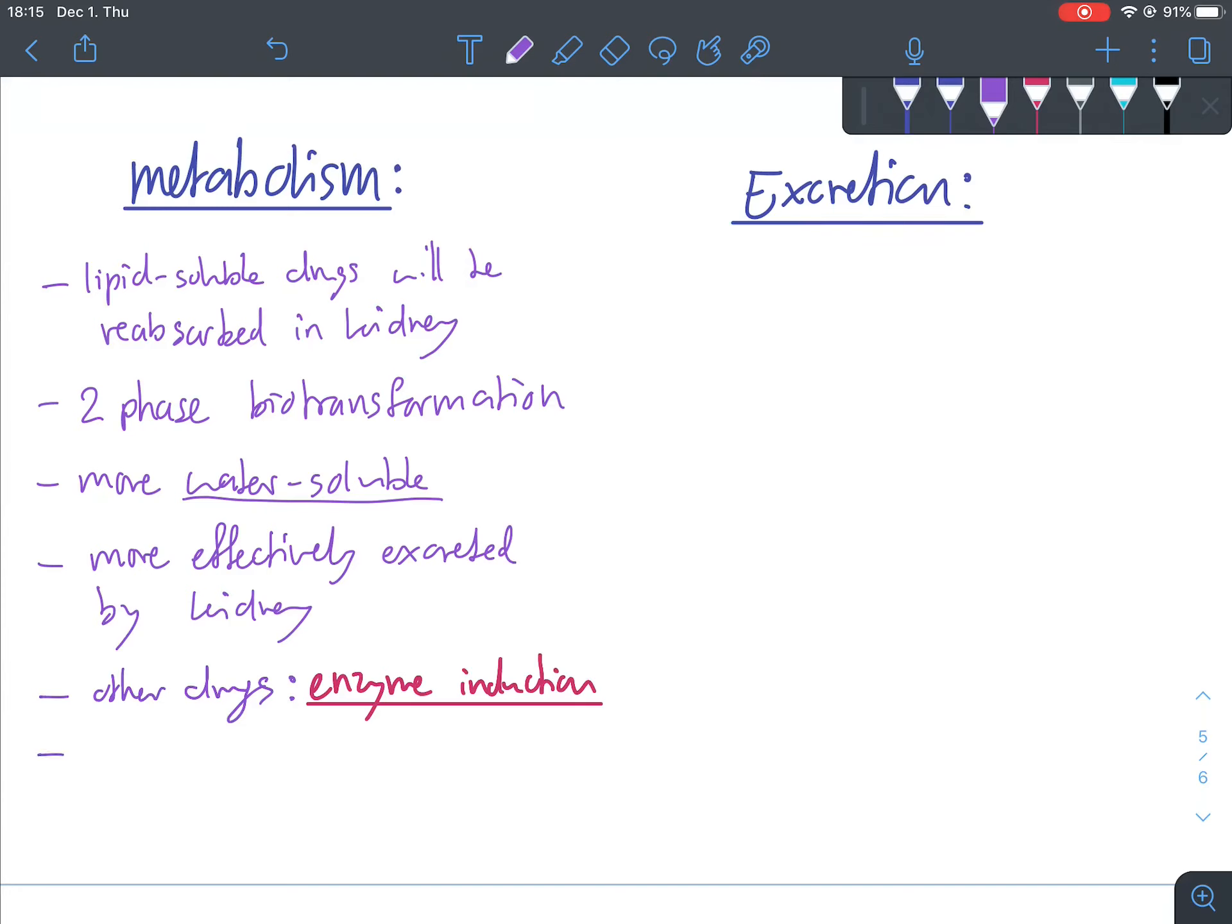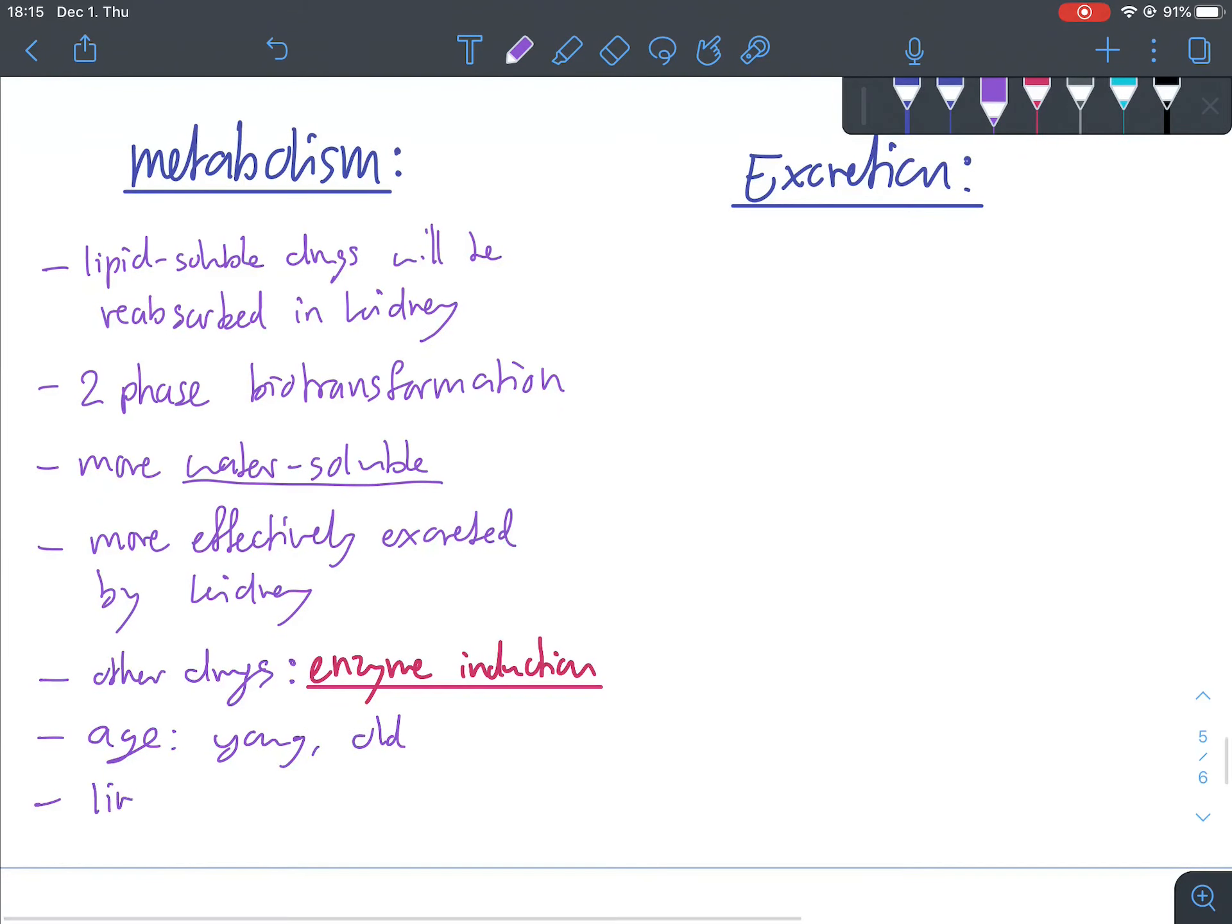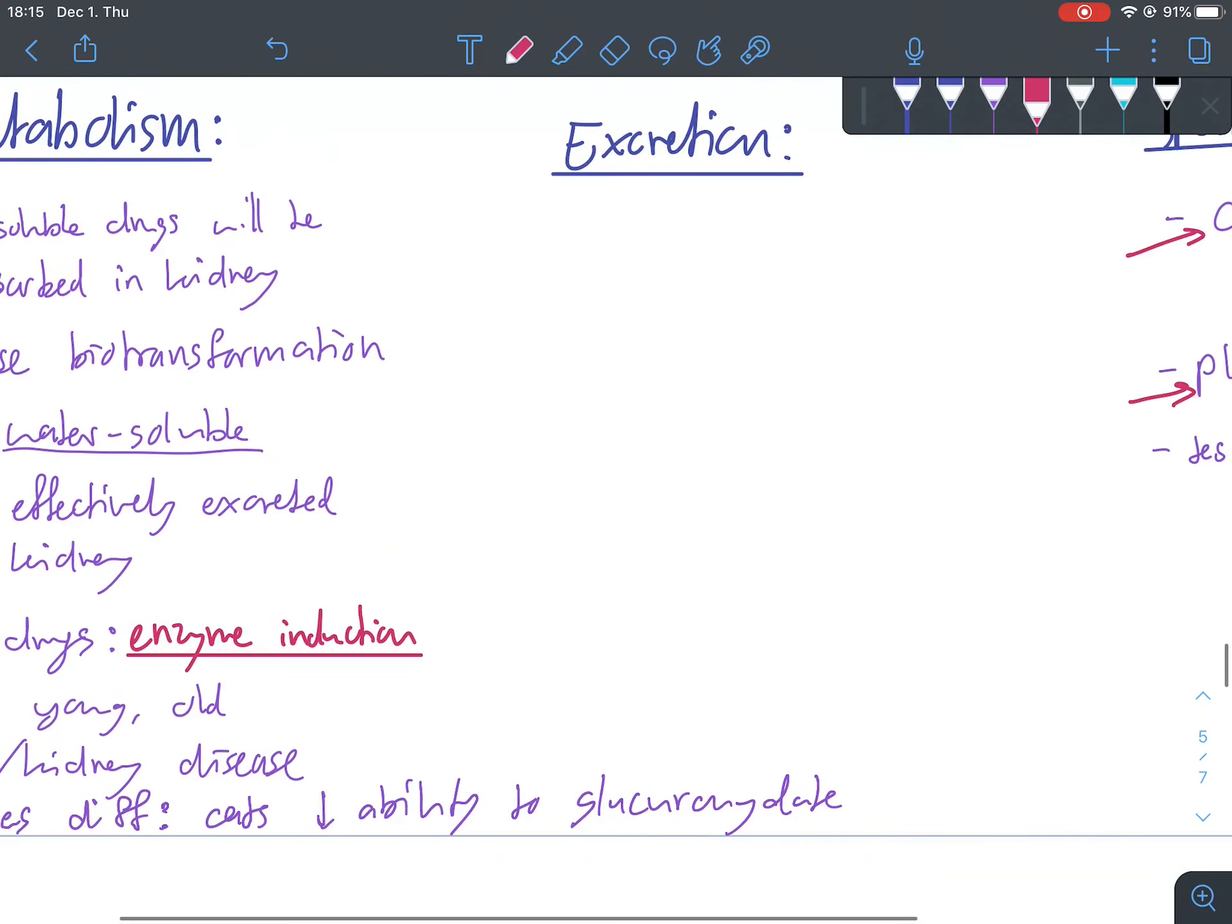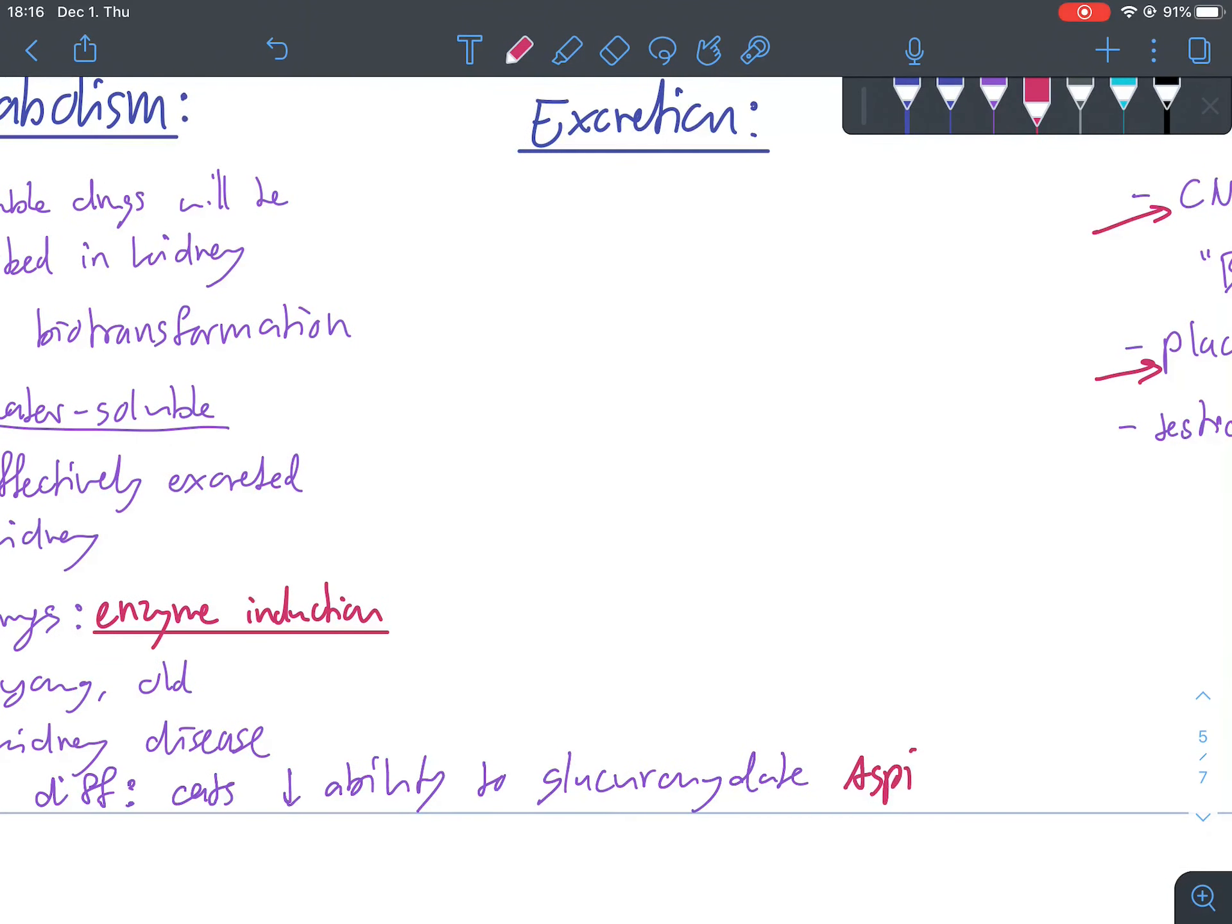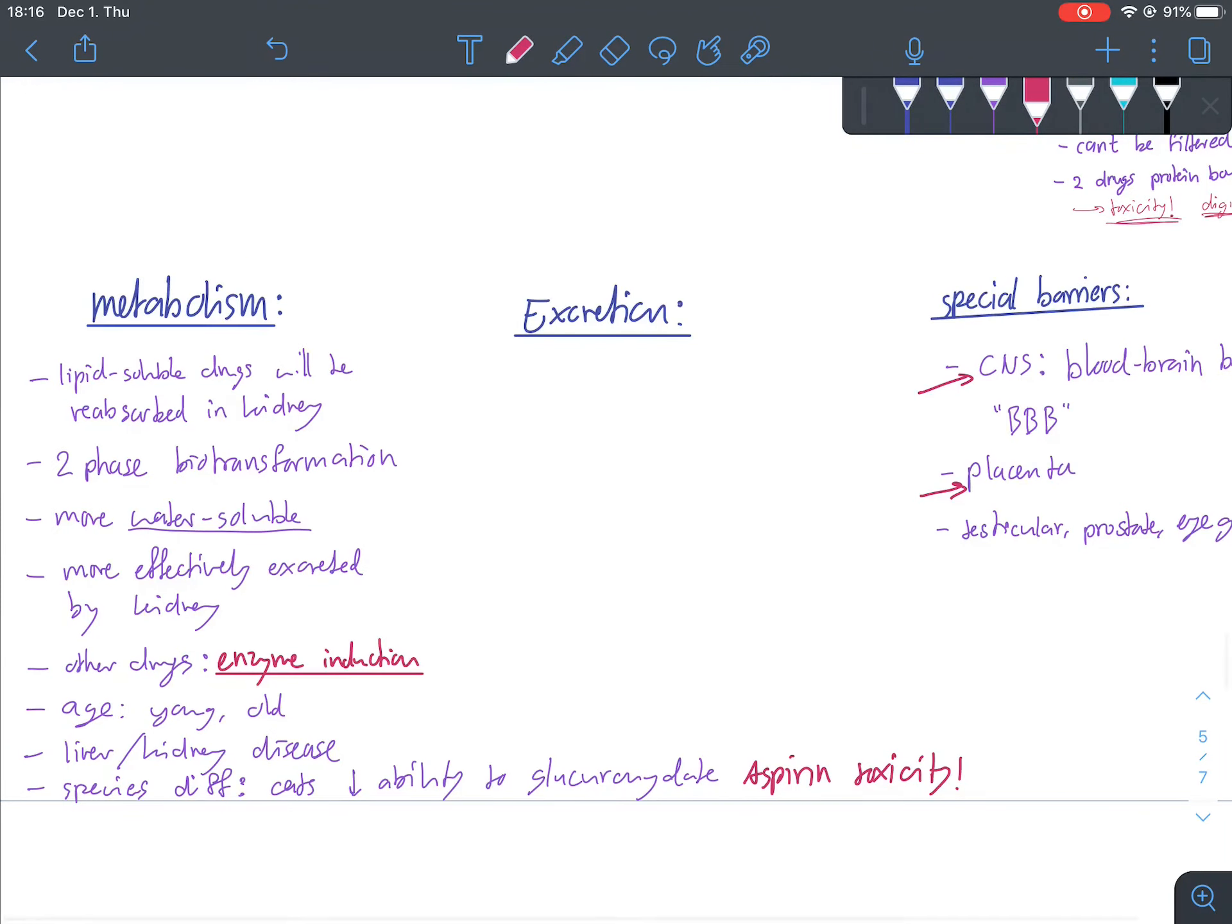And obviously the metabolism is influenced by age, so the young, the old are particularly not very good at doing this, and it's also influenced by the presence of liver or kidney disease, in which our patient is also going to be less capable of doing this. And there are some species differences. For example, if we look at cats, they have very low abilities to glucuronidate, which basically makes them very susceptible to aspirin toxicity because they can't really break that down. So that's a little species-specific thing here.